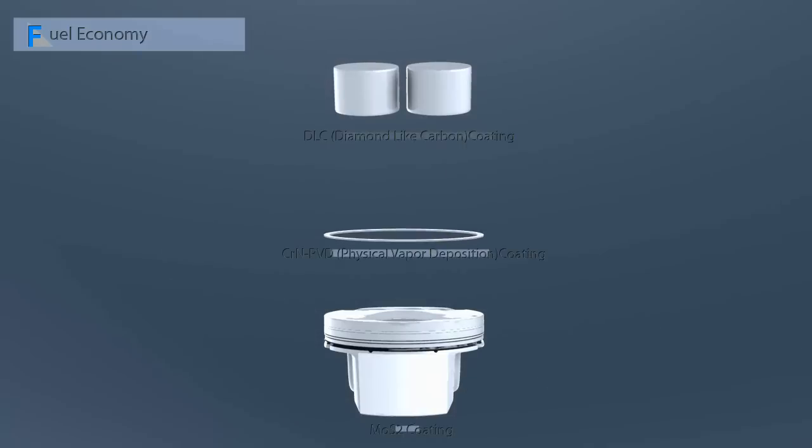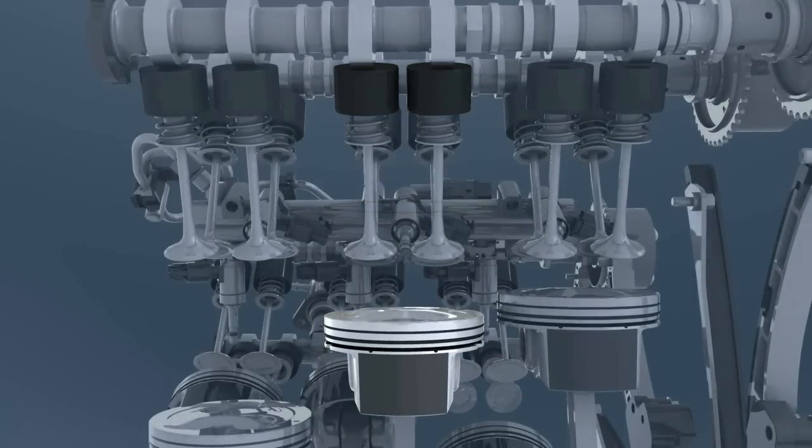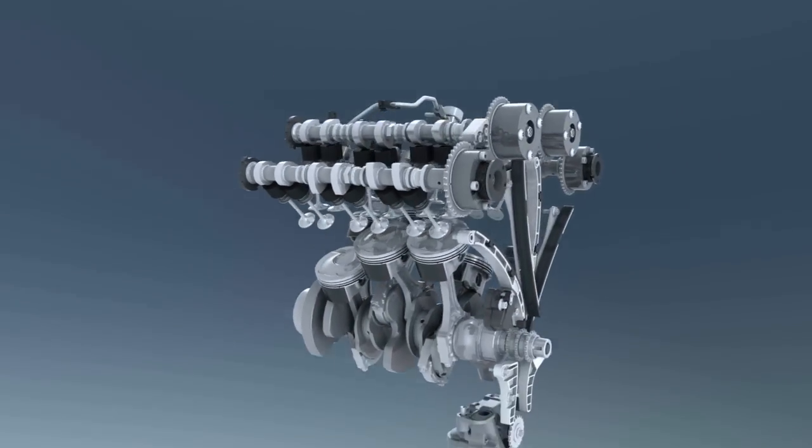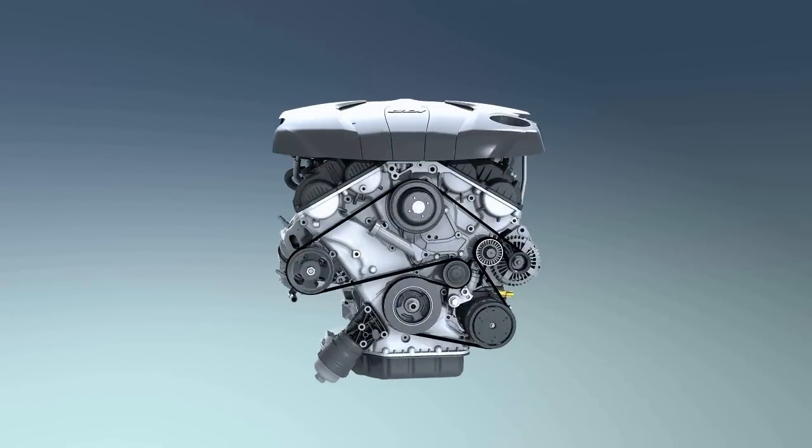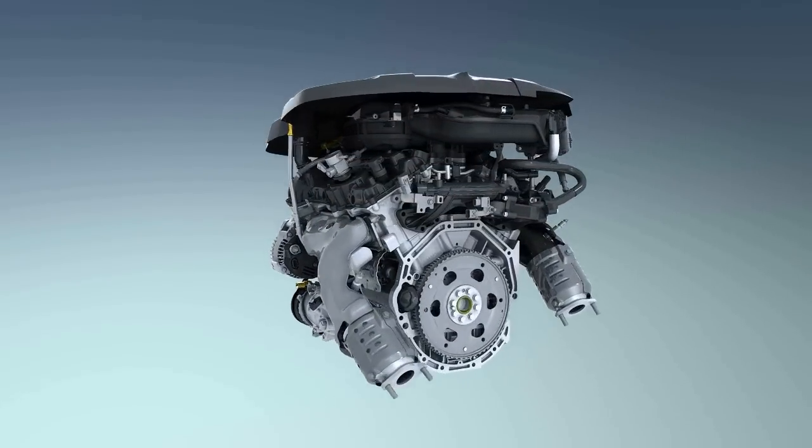Exotic coating technologies have been applied to minimize friction losses. The piston skirts, piston rings and tappets are coated with special materials to reduce friction and the world's best-in-class fuel economy is achieved by applying new technologies to reduce fuel consumption.